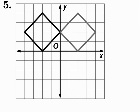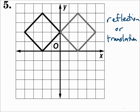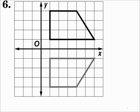Number five: depending on the way you look at this, you might get a different answer. Do you see this as a shift where the figure is just sliding to the right? In that case it would be a translation. Or do you see this as flipping over from left to right? In that case it would be a reflection. Both answers are correct. Number six: this is flipping from the top to the bottom — it's a mirror image. That's a reflection.